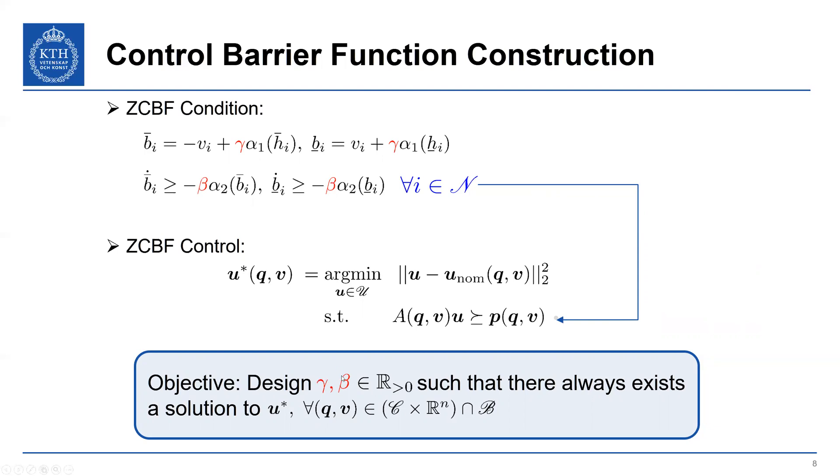But we also have another design parameter we've included in the ZCBF condition. And so the idea here is that we're going to design gamma and beta, these design parameters we've included in our construction of the ZCBFs, so that we always have a solution to U star. And this is really the problem that we're solving here.